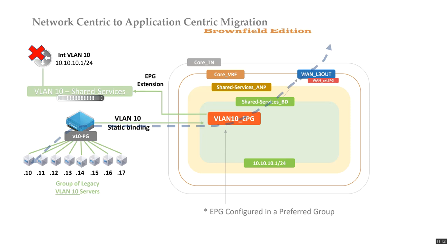Now you have to make a determination: am I okay operating in network-centric mode, or do I want to move into a hybrid or application-centric mode? At this point you can leverage taboo contracts to deny traffic. For example, if there's a virus outbreak and you want to stop certain port communication, you can apply a taboo contract to achieve some blacklisting.